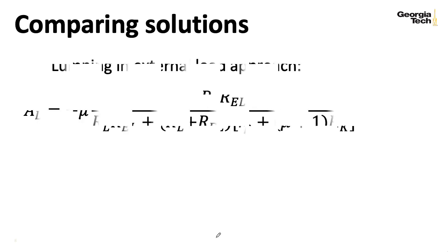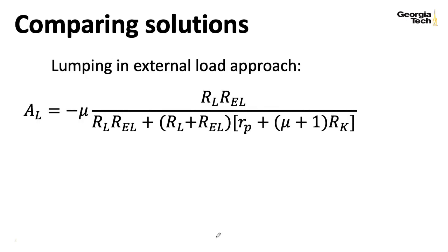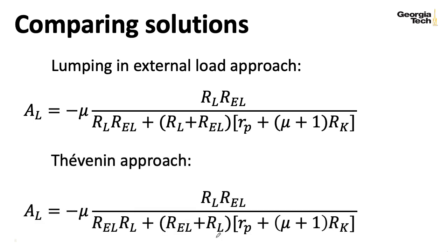So just copying down the solutions we had from the previous slides. For the approach we just talked about where you lump in the external load ahead of time, we get this expression. From the earlier slide where we use Thevenin equivalents and the voltage divider, we get this expression. This was just copied down directly from those previous slides. And we see that they are the same. Just the way I worked out the algebra, I had these things in different orders, but they're the same expression.